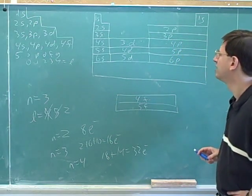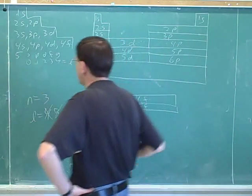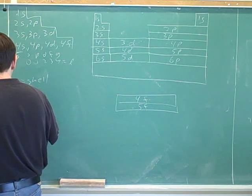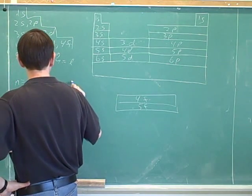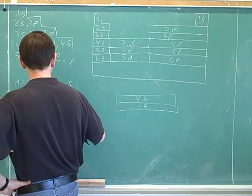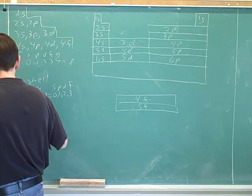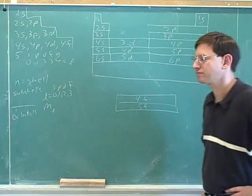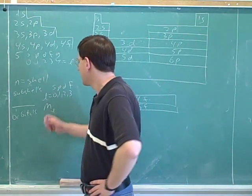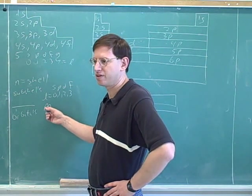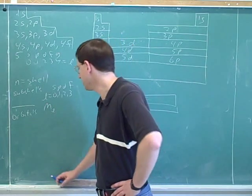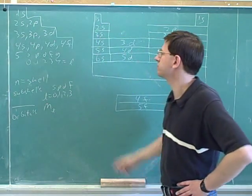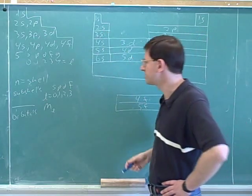The shells are called n, the subshells are called s, p, d, f or l. The orbitals also have a quantum number called m sub l. The m sub l values are always integers centered at zero, and you figure out how many you need based on the number of orbitals. In the s block there's one orbital, so m sub l equals zero.